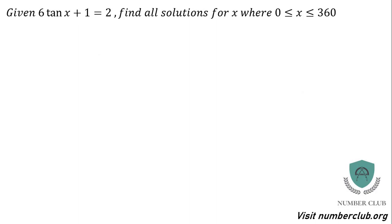We've got 6 tan of x plus 1 equals 2 — find all solutions for x where x is between 0 and 360 degrees. This is not the same as 6 tan of (x plus 1) equals 2. If I wanted that, I would have put brackets around. Here, adding has to happen way after I apply tan: I take x, apply tan to it, multiply by 6, then add 1, and get 2. These two things are not the same.